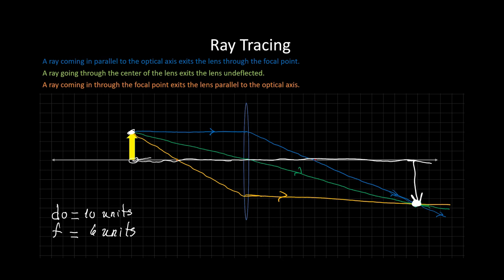So roughly, let's count how many units we have. This is 6, 7, 8, 9, 10, 11, 12, 13, 14, 15. So the image, the distance to the image is 15 units. And its height, let me see here, HO here is 3 units. And here HI is 1, 2, 3, 4, roughly 4 and a half units.